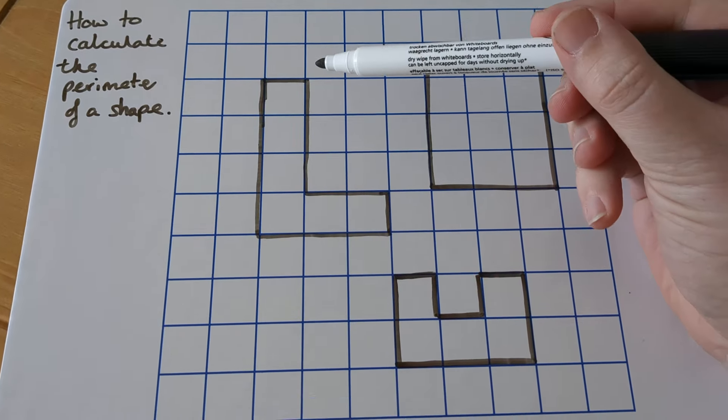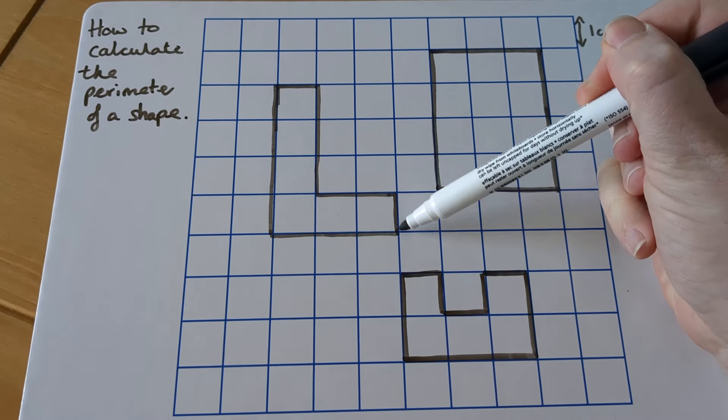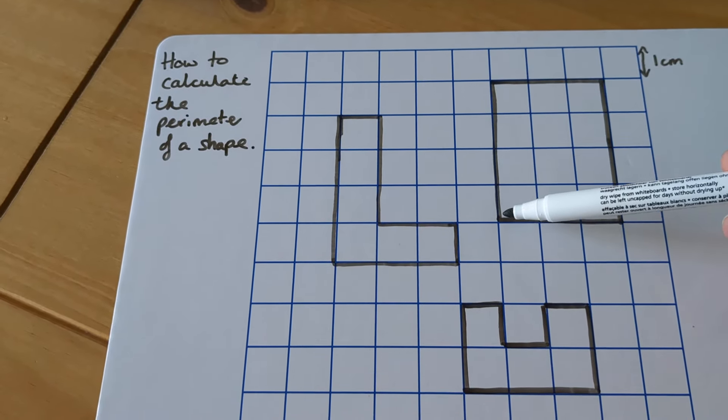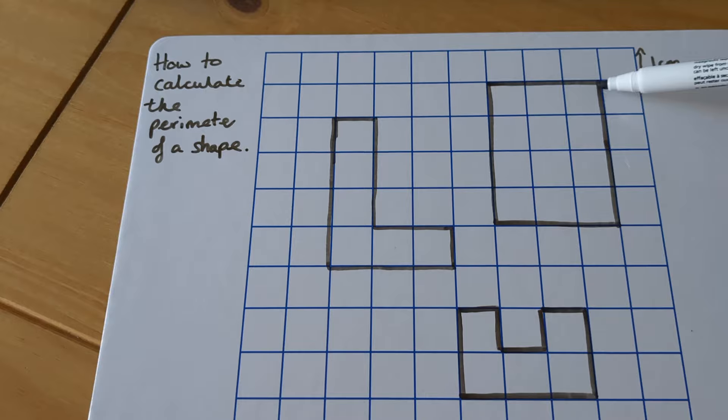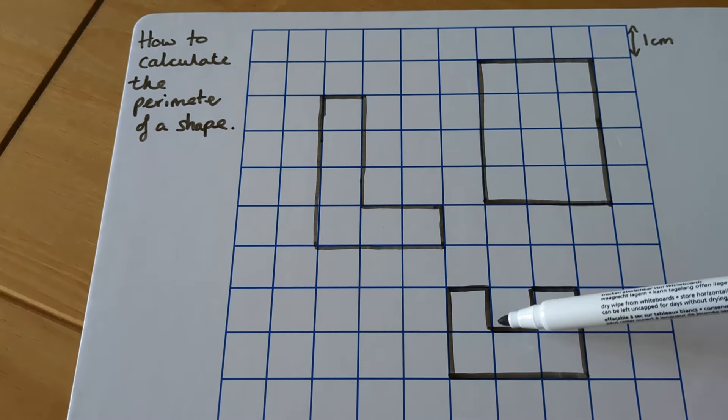So on these shapes we have the outside bit here. So this is the outside which goes around the shape. That's the perimeter. Again this shape here, you've got the perimeter which goes around the outside. We've got a final shape here, the perimeter around the outside.